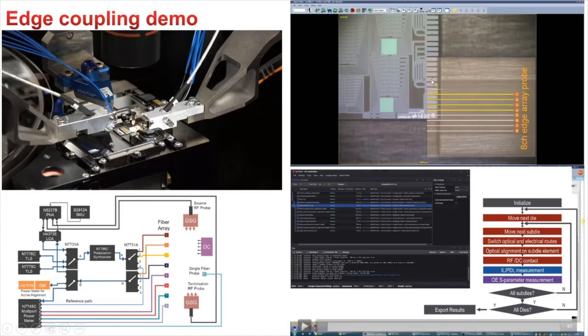Here we have some alignment structures and here we have counter directional coupler structures, where you couple in the light, it gets distributed over different ports, and we are measuring just two ports. And this structure is duplicated three times. So we are measuring three of those structures and the alignment structures.